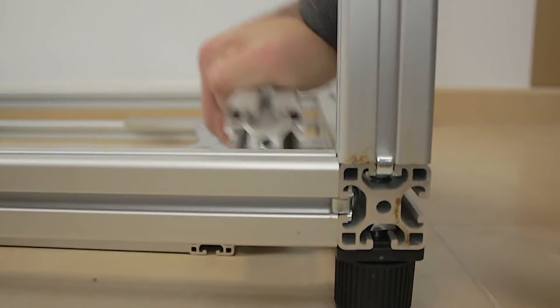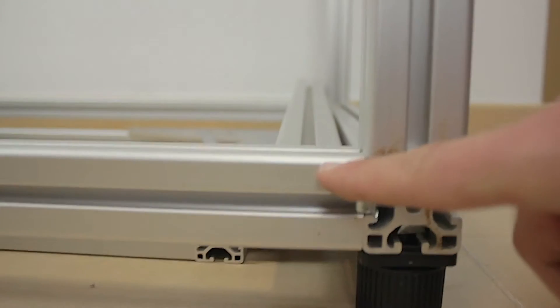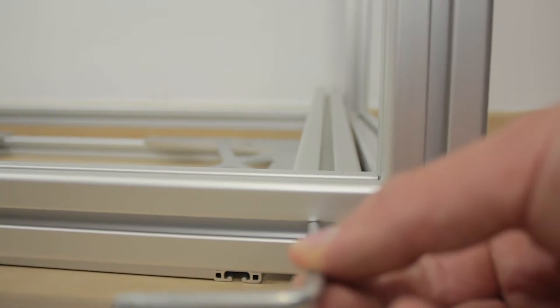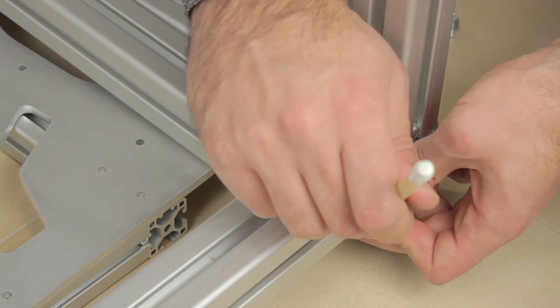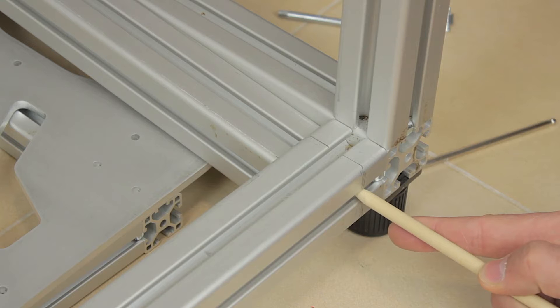Here as it is a change we made later on the profiles will fit in place but there is no hole to insert the allen key and tighten the bolt. So what I'm going to do now is mark the position of the hole we need to make with the help of a pencil.